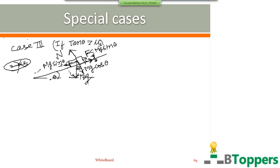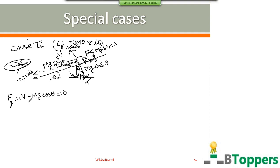I choose the direction parallel to the inclined surface as the positive x-axis and the direction perpendicular to the inclined surface as the positive y-axis. The y-component of the resultant force: Fy equal to N minus mg cos θ equals zero. So the magnitude of the normal reaction N equals the magnitude of the component mg cos θ.